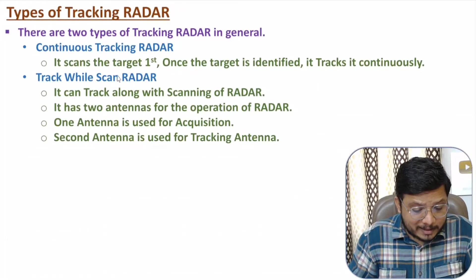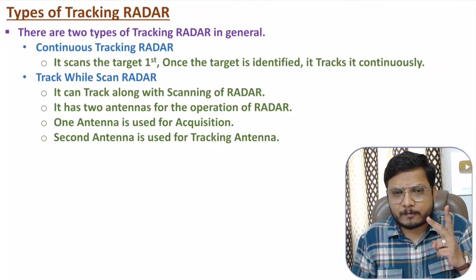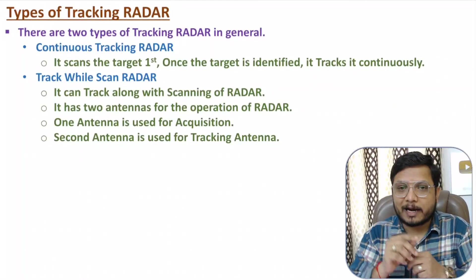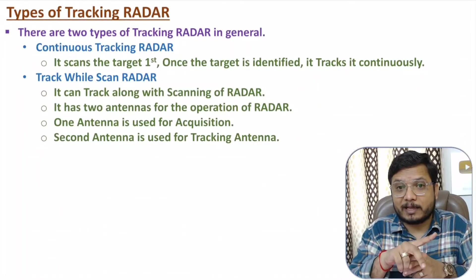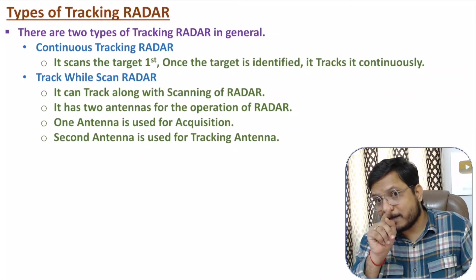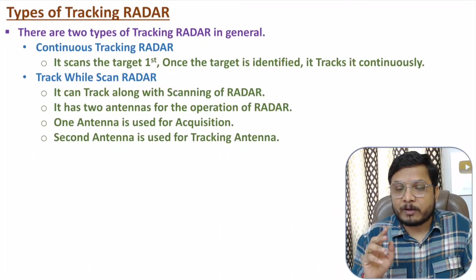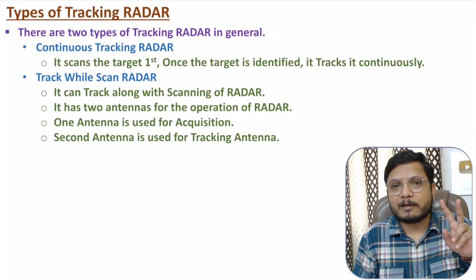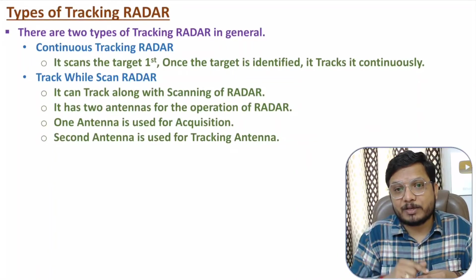Our agenda is to track targets using tracking radar. There are two ways to provide tracking. One is by physical motion of the radar system — we can steer the beam by physically moving the antenna. The second is by using an antenna array: by providing a phase difference to the array elements, we can electronically steer the antenna beam to track the target.